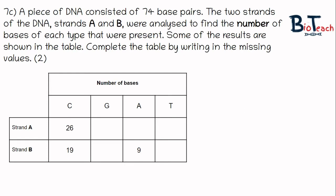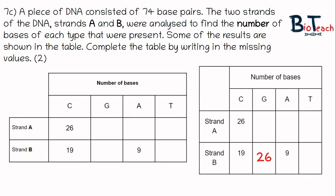The next question, 7c, gives you a table. It says that the DNA consists of 74 base pairs and two strands, and you have to find the number of bases of each type on strands. A couple have been provided on strand A and strand B. We have on strand A 26 of cytosine or C. As G is complementary to C, then strand B must have 26 of G. Similarly, on strand B we have 19 of C, so on strand A we must have 19 of G.